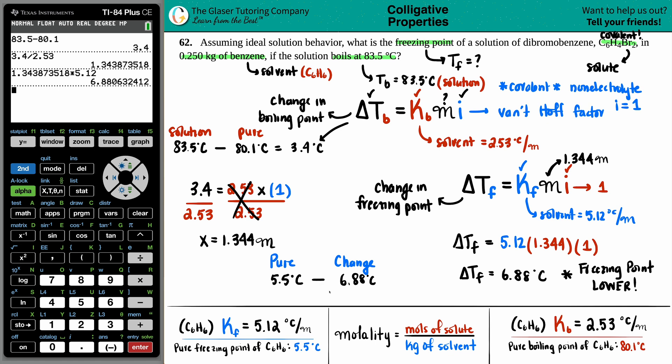We would subtract because that freezing point, that new freezing point is always going to be lower and lower is subtraction. So we just have to subtract these two numbers and we are good to go. 5.5 minus this, and there it is. The new delta TF is negative 1.4 degrees Celsius. And that is the final answer.